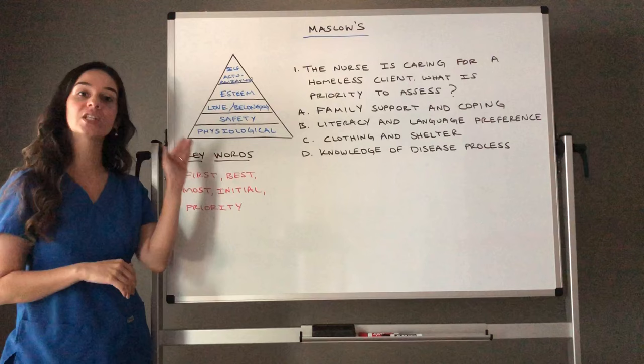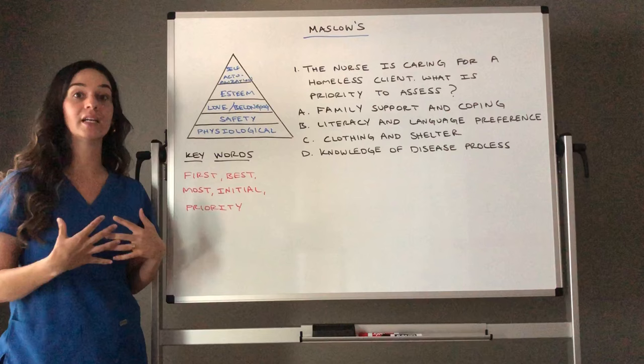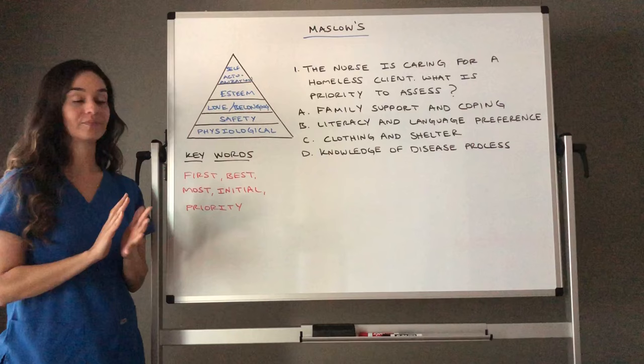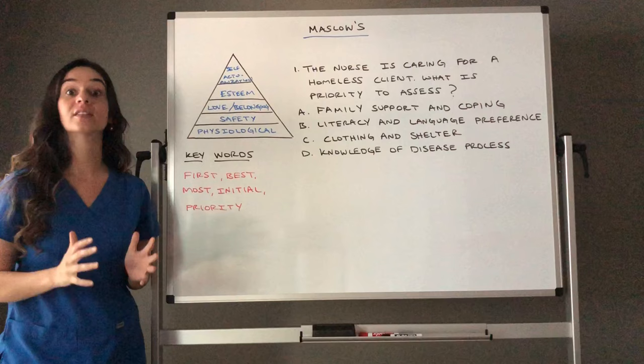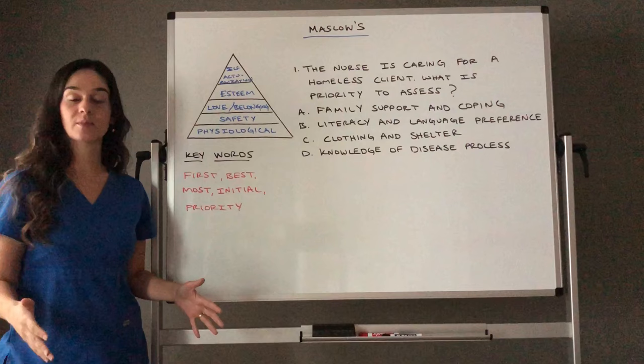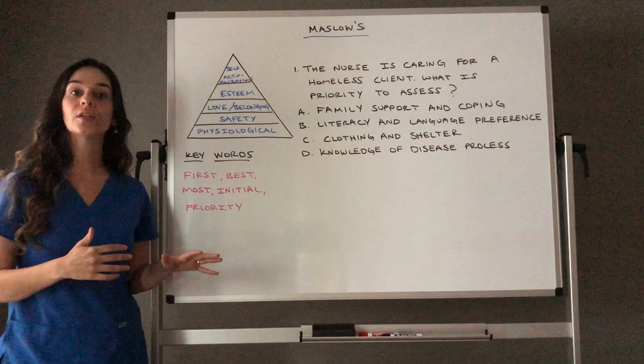Let's talk about what each section of the pyramid means. Physiological is about your body's survival — your ability to get food and water, clothe yourself, and be in a shelter that protects you from the outside environment. Safety refers to the safety of your immediate environment in terms of protecting yourself from danger; it can even extend to job security.